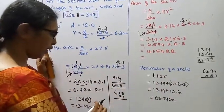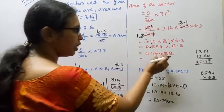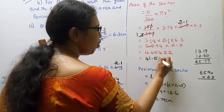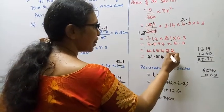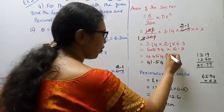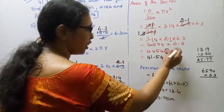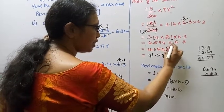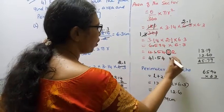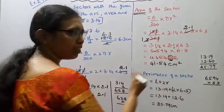For the length of the arc we confirmed 13.19 at 2 decimal places. The area result at 2 decimal places is 41.54. Confirming the third decimal digit is 5, so rounding gives 41.54 cm squared. Therefore, the area of the sector is 41.54 centimeters squared.